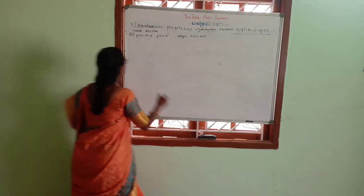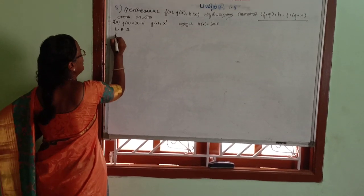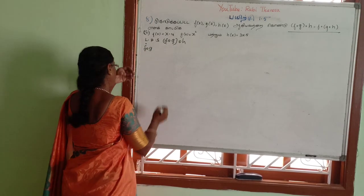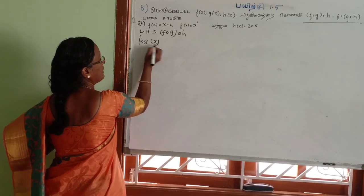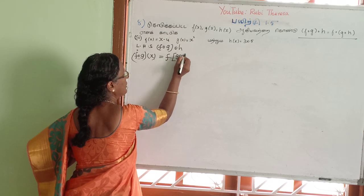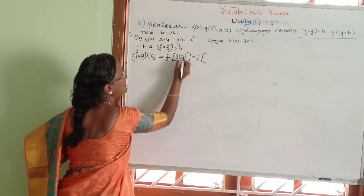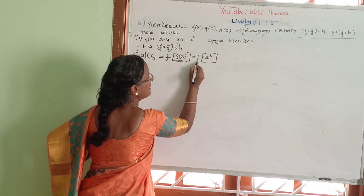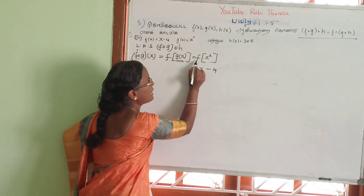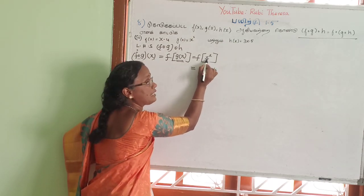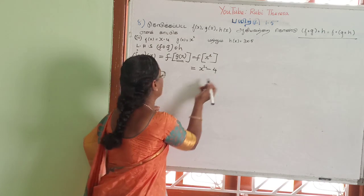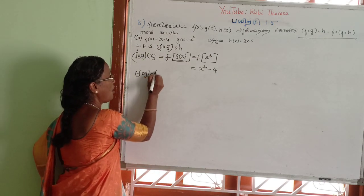We will try to prove both sides are equal. F of G of H of X. F of X is X minus 4. G of X is X squared. So this is X squared. That gives us X squared minus 4. This is F of G of H.